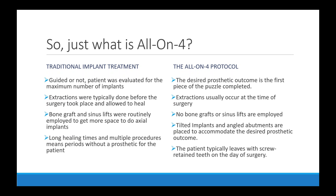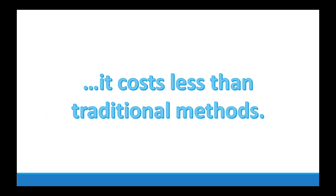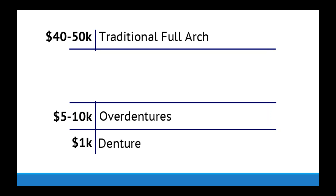Now that we see a good comparison of All-on-Four versus traditional full-arch implant treatment — and we're not saying one is better than the other — there is one more aspect that really drives it home: it costs significantly less than the traditional method. Looking at the pricing model seen for decades, patients were limited to a very limited number of choices: about $1,000 for a denture, about $5,000 to $10,000 for overdentures, or $40,000 to $50,000 per arch for traditional full-arch treatment.